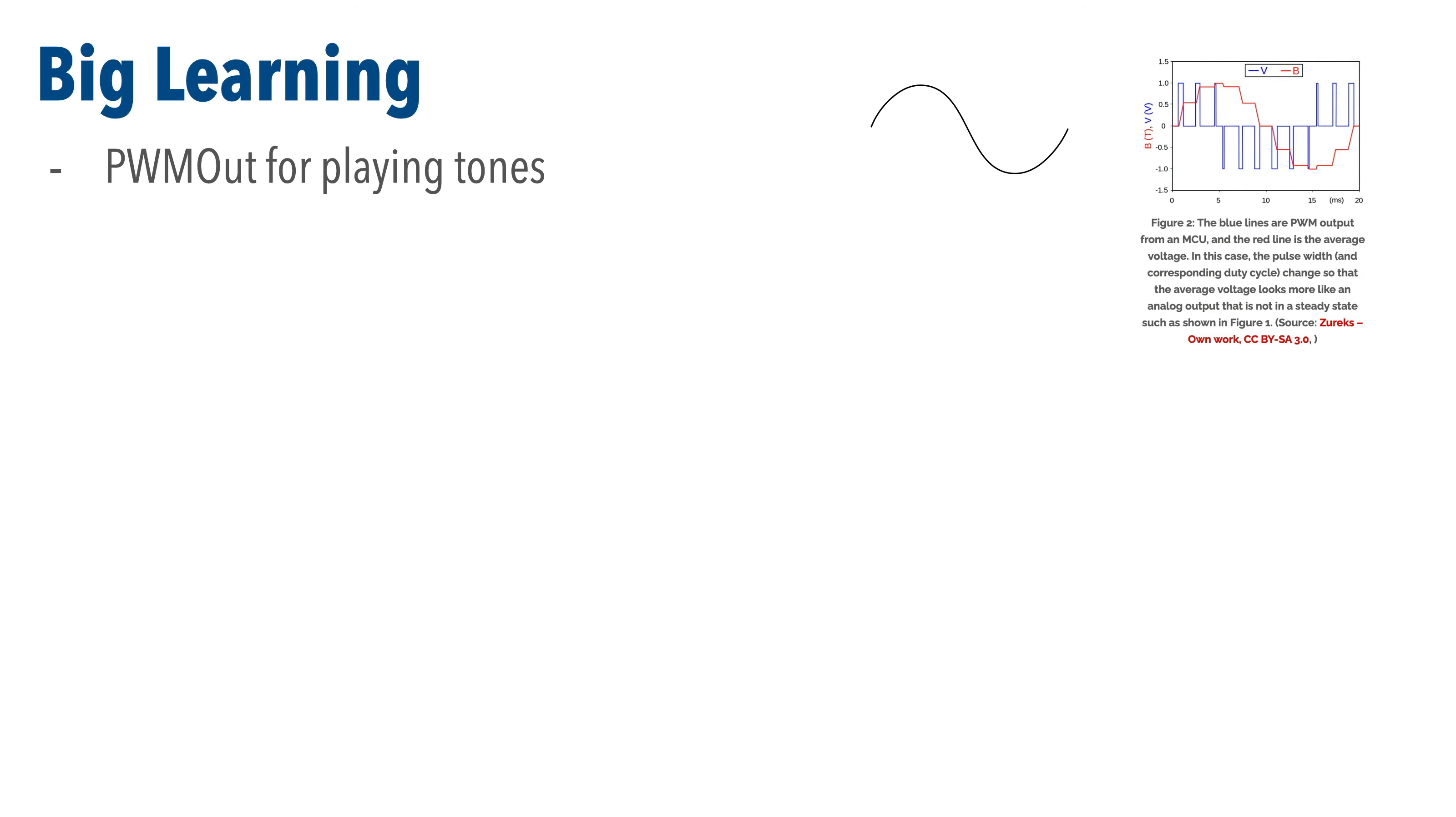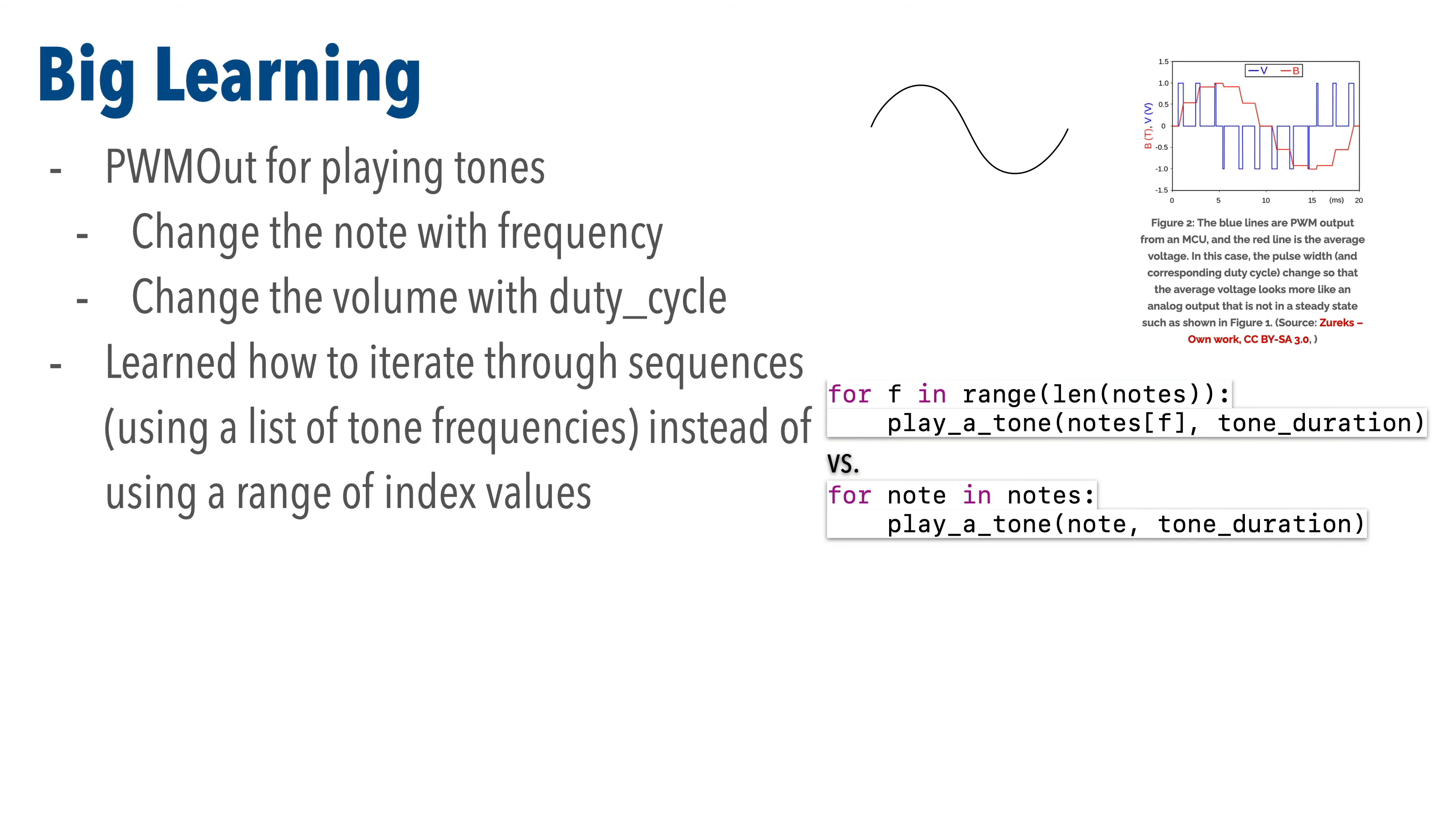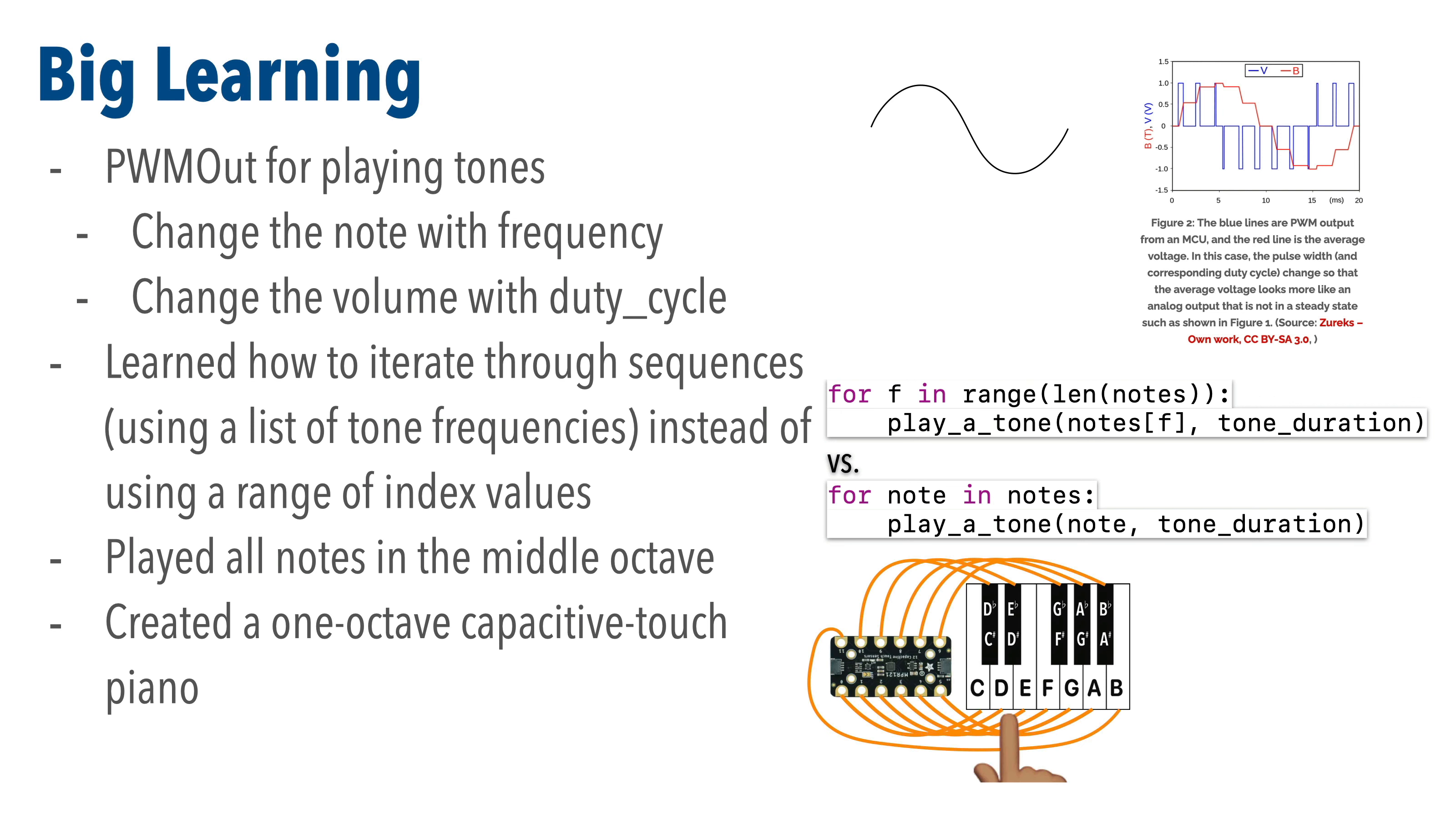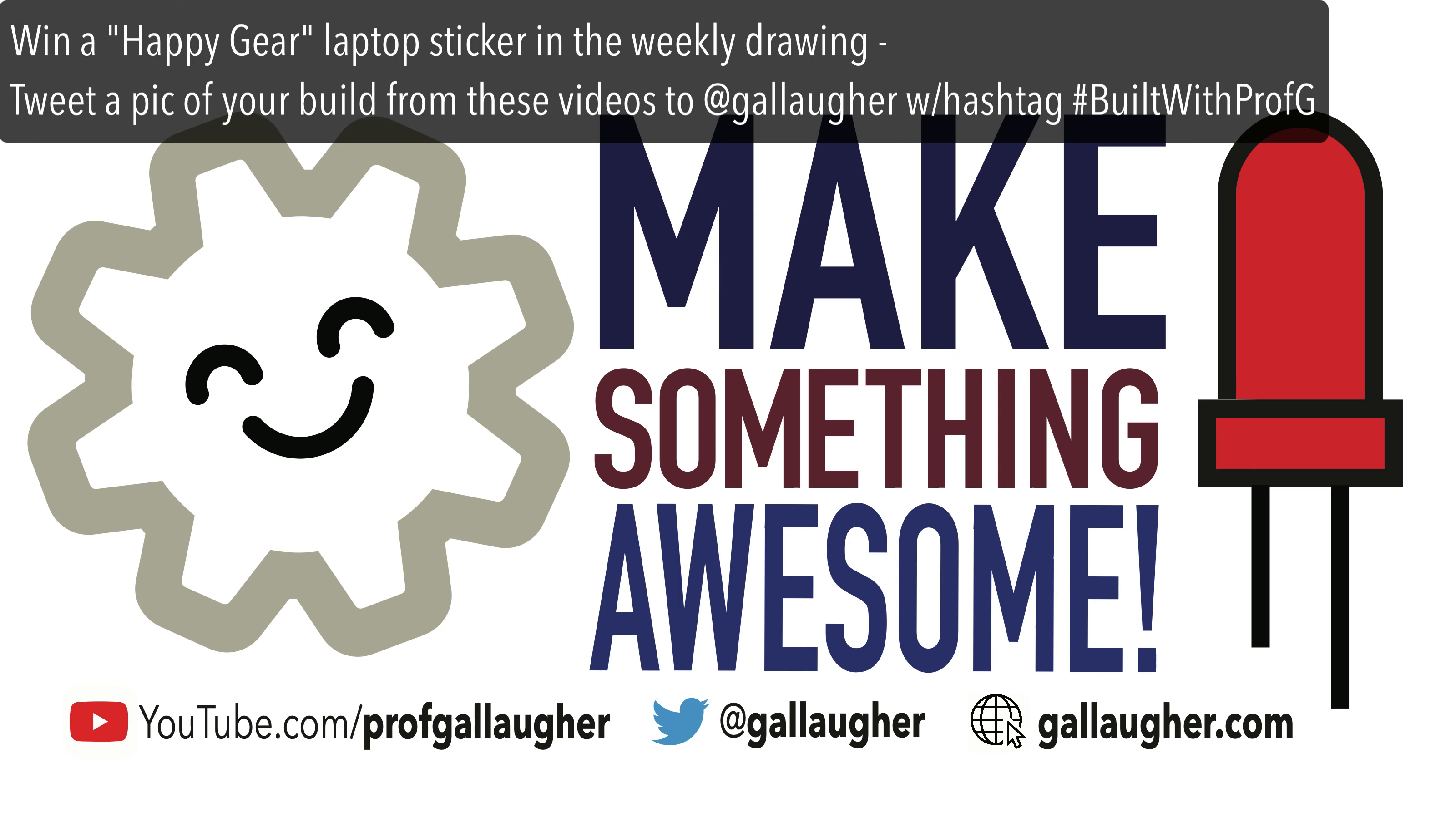But you piano-playing Python programmer, I hope you feel good about more big learning. We covered how to use PWM to play tones, we changed the notes by changing frequency, and we changed the volume by changing the duty cycle. We learned how to iterate through sequences, we played all the notes in the middle octave, we combined this new knowledge with our previous Capacitive Touch skill so that we could create a one octave Capacitive Touch piano keyboard, and we did this build on both an Arduino Nano RP2040, and on a native fruit CutiePie RP2040. Play yourself a celebratory tune, keep at it, and get excited for more goodness to come.